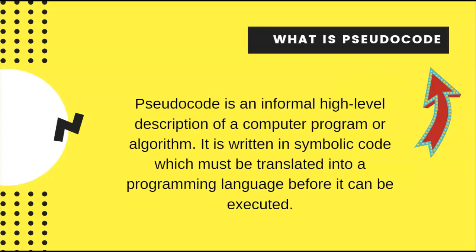What is pseudocode? In a flowchart, it's a pictorial representation to provide a solution to a particular problem. Pseudocode is the same idea — an informal, high-level description of a computer program or algorithm. It is written in symbolic code using keywords and mathematical operators, which must be translated into a programming language before execution. It gives you the overall picture of the solution to a particular algorithm.